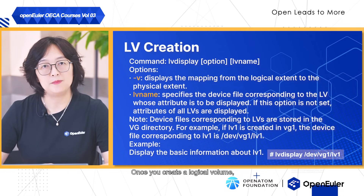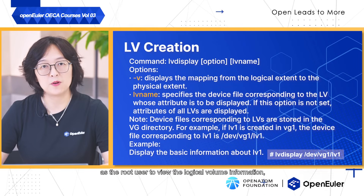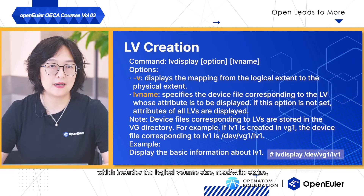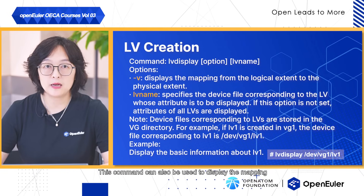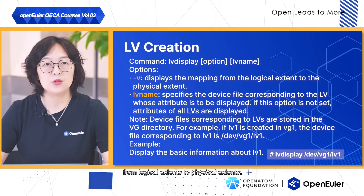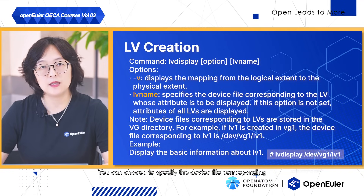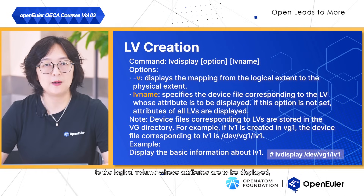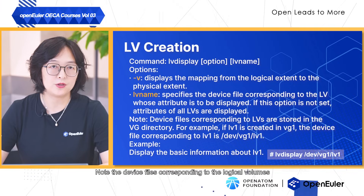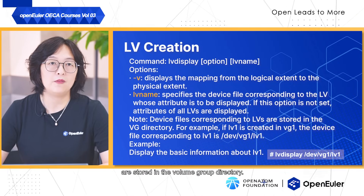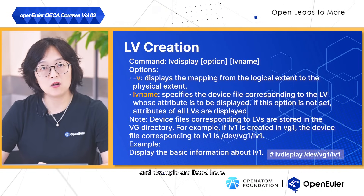Once you create a logical volume, you can run the lvdisplay command as the root user to view the logical volume information, which includes the logical volume size, read-write status and snapshot information. This command can also be used to display the mapping from logical extent to physical extent. You can choose to specify the device file corresponding to the logical volume whose attributes are to be displayed, or display the attributes of all logical volumes. Note that the device files corresponding to the logical volumes are stored in the volume group directory. The specific command syntax, command options and example are listed here.